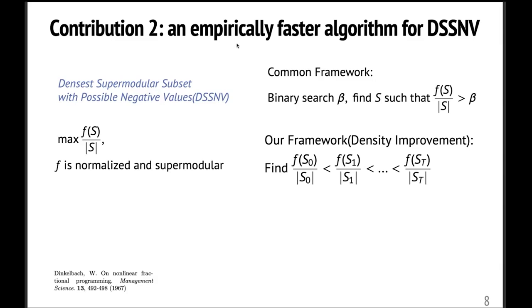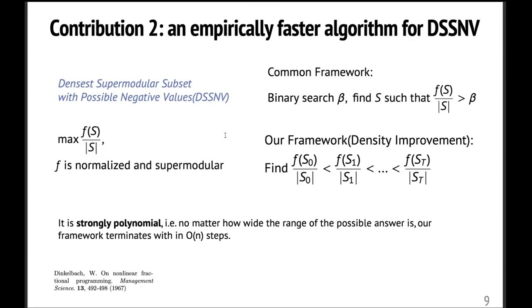And we tackle this problem from a different perspective and propose a super simple and neat framework called density improvement. Basically, instead of binary searching the answer, we try to improve the answer iteration by iteration. So in the current iteration, we will try to find a better solution than the previous iteration. If we can do it, then the answer is improved. Otherwise, then we can certify, oh, the current solution is actually the optimum, then we can stop. So this is super simple and intuitive. And although here is an exponential number of possible vertex sets in a graph, we can show that this procedure will only last for at most n steps. So it means this algorithm is strongly polynomial.